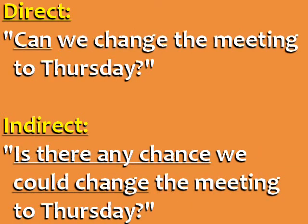Direct: 'Can we change the meeting to Thursday?' Indirect: 'Is there any chance we could change the meeting to Thursday?' 'Is there any chance' is another way to ask an indirect question when the direct question begins with 'can.' We also use the word 'could' before 'change' in the indirect question.